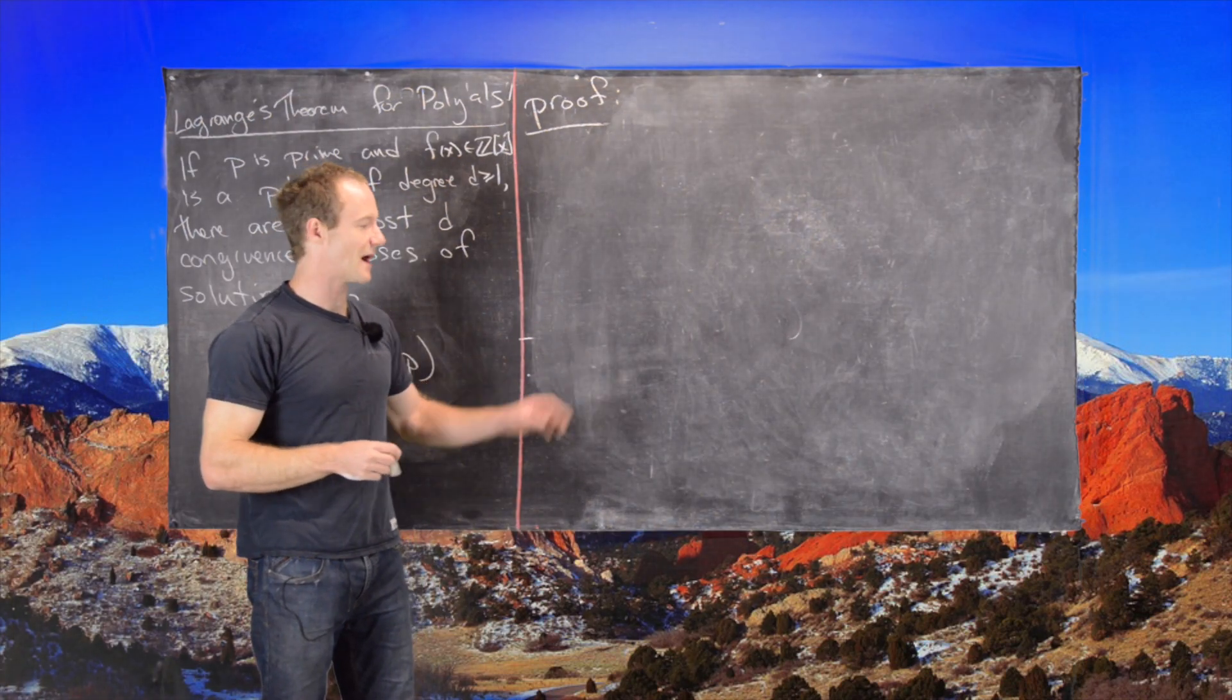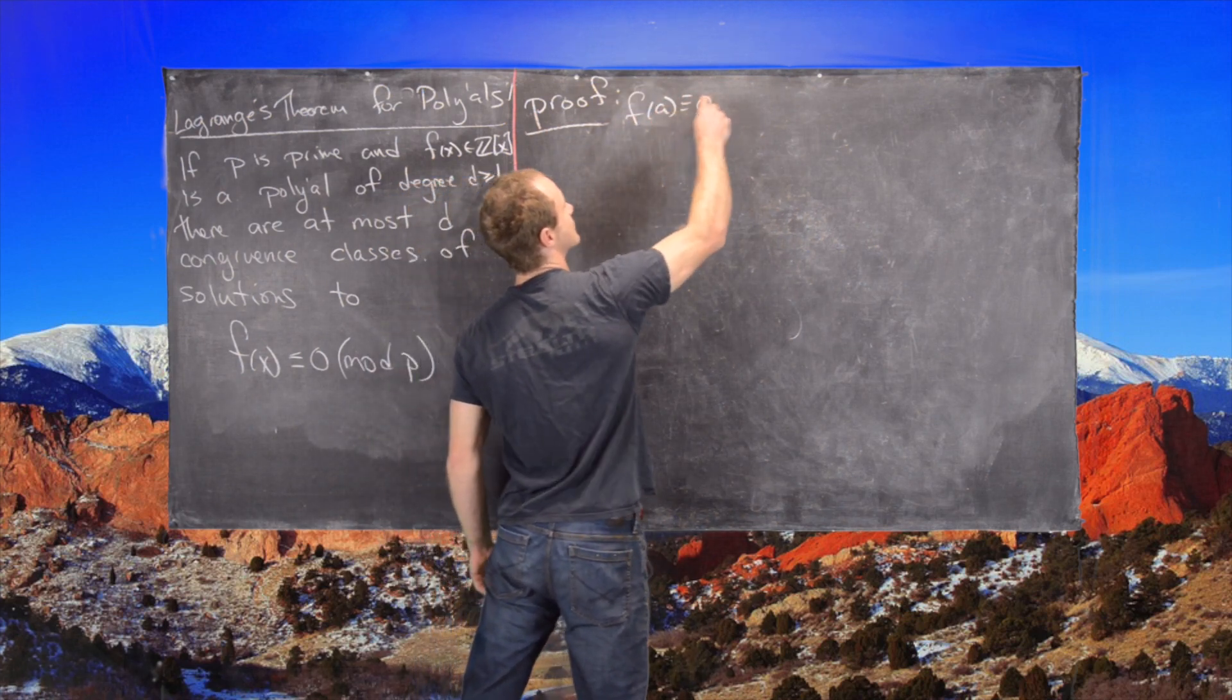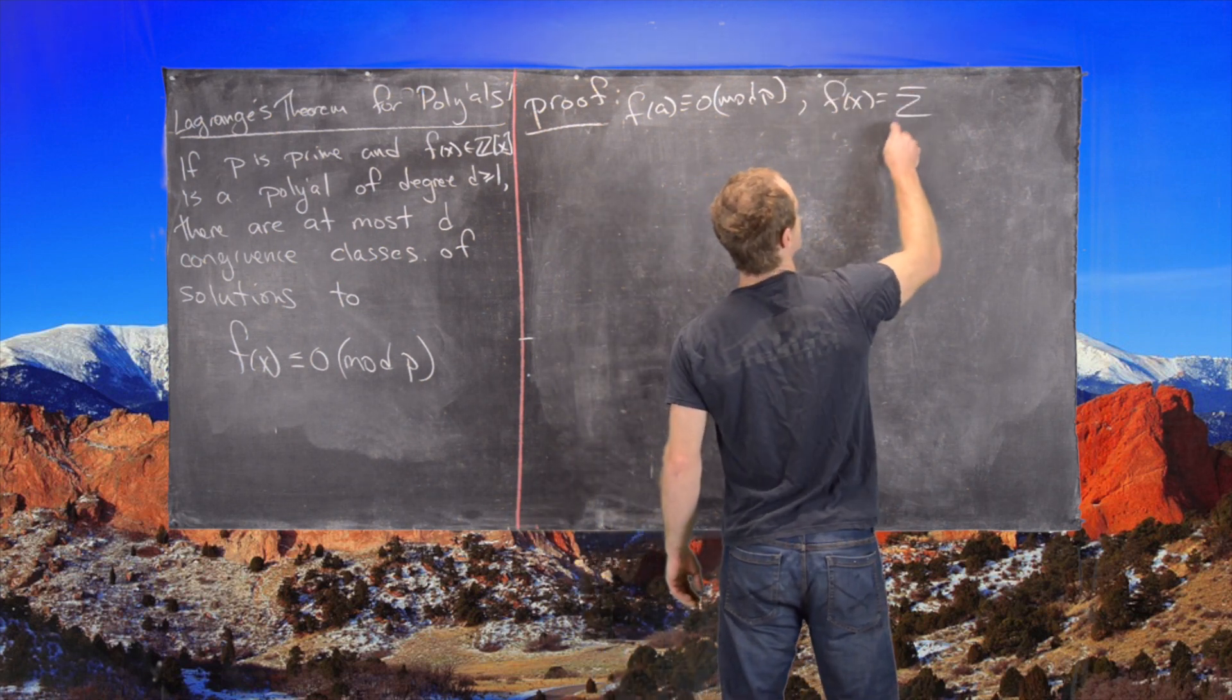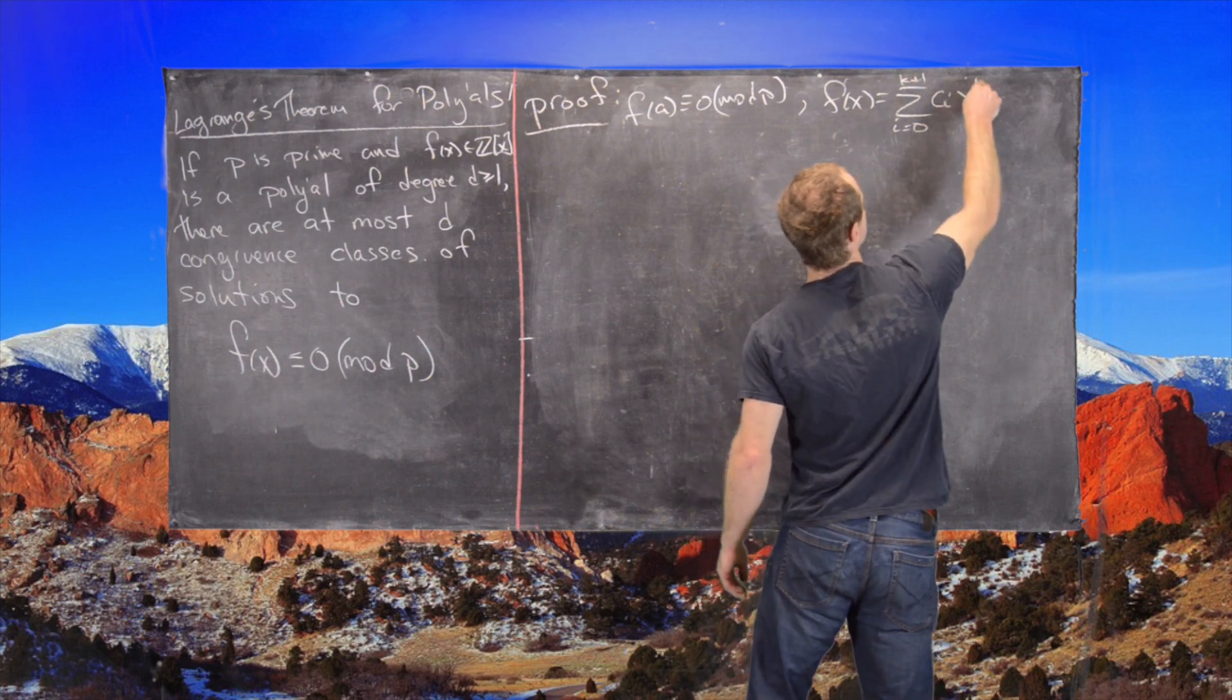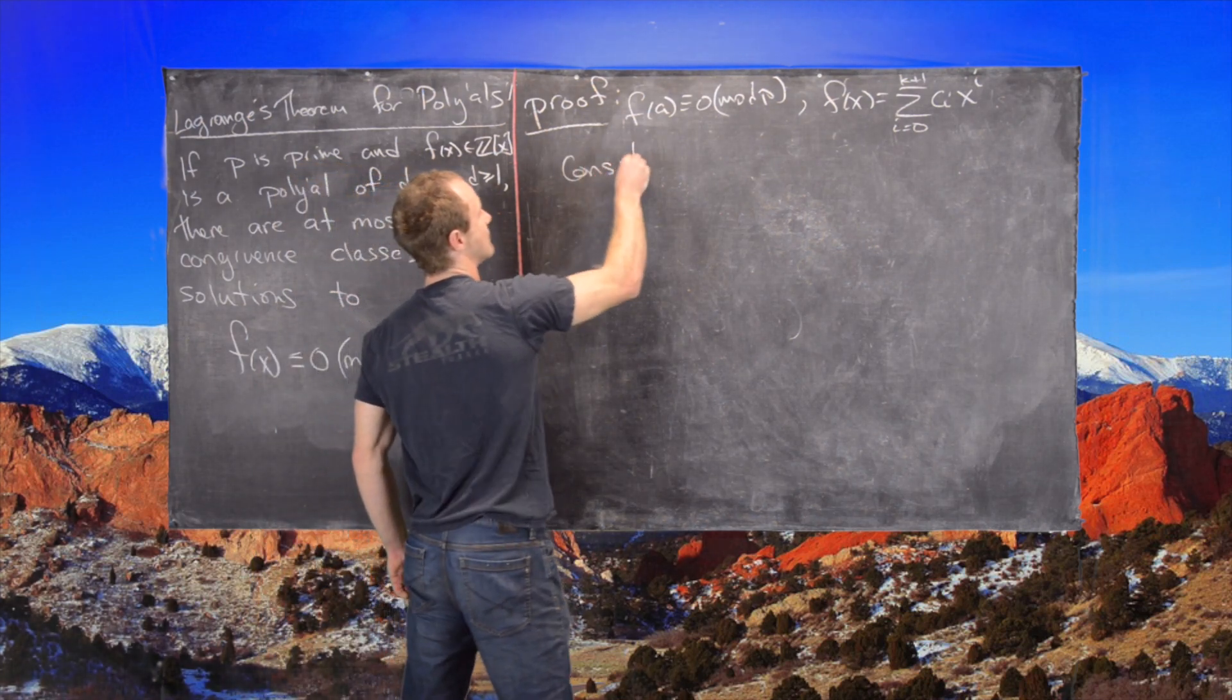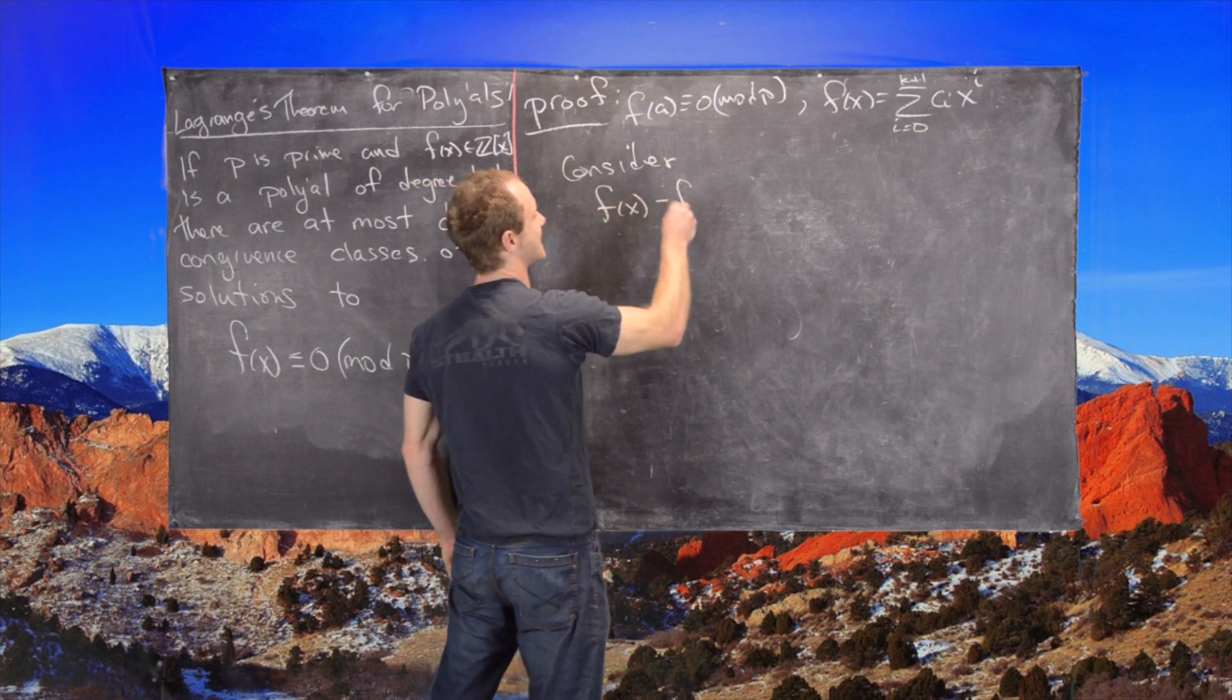Let's remind ourselves that we left ourselves with the setup that F of A is congruent to 0 mod P, and we had this version of F of X given by this sum. From there, we want to look at the following object.